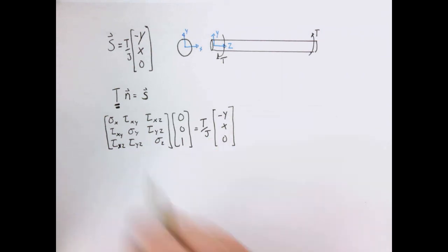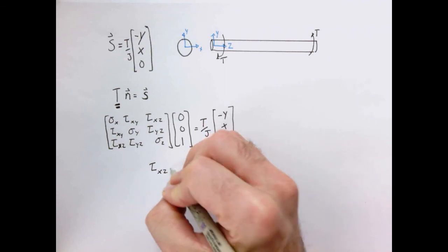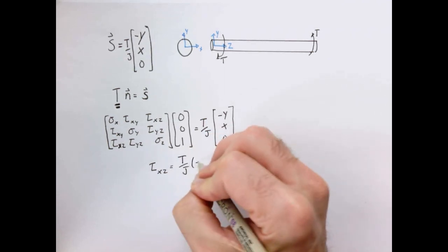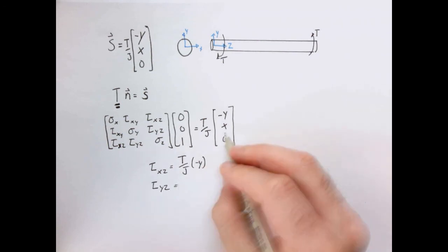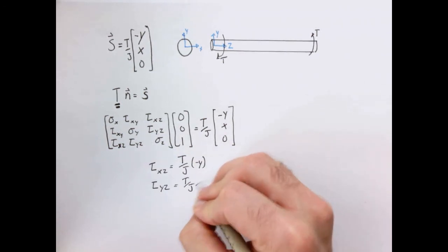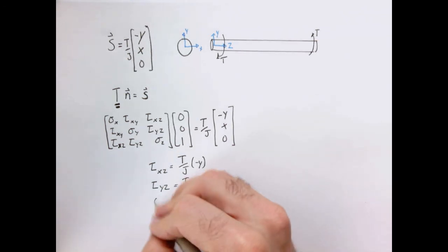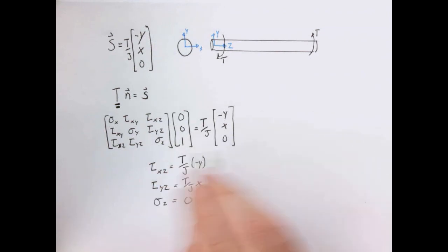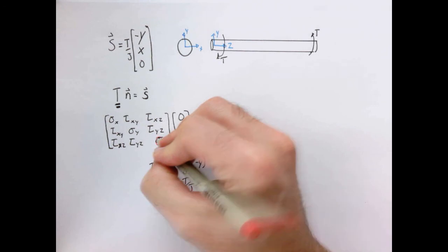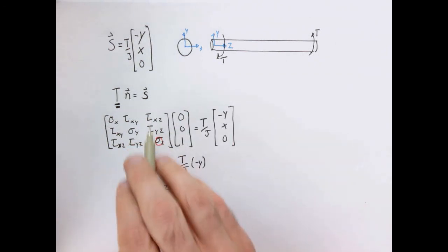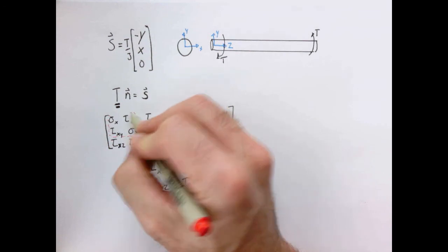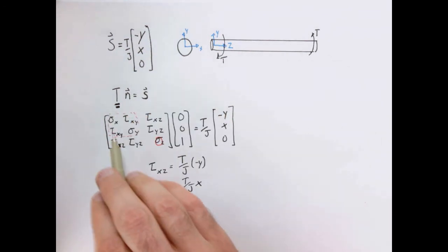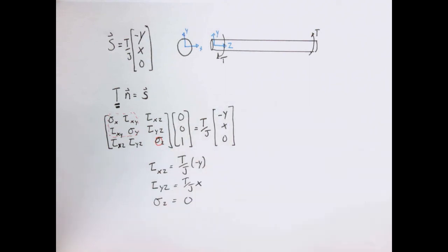Looking at our matrix-vector operation, the x component of this equation tells us that τ_xz should equal (-Ty/J), and the shear stress τ_yz should equal (Tx/J), and σ_z times 1 equals 0, so σ_z is zero. These numbers are known, and by symmetry τ_zx and τ_zy are also known. This equation doesn't tell us anything about the four in-plane quantities because they get multiplied by zero, so the relationship is still satisfied.